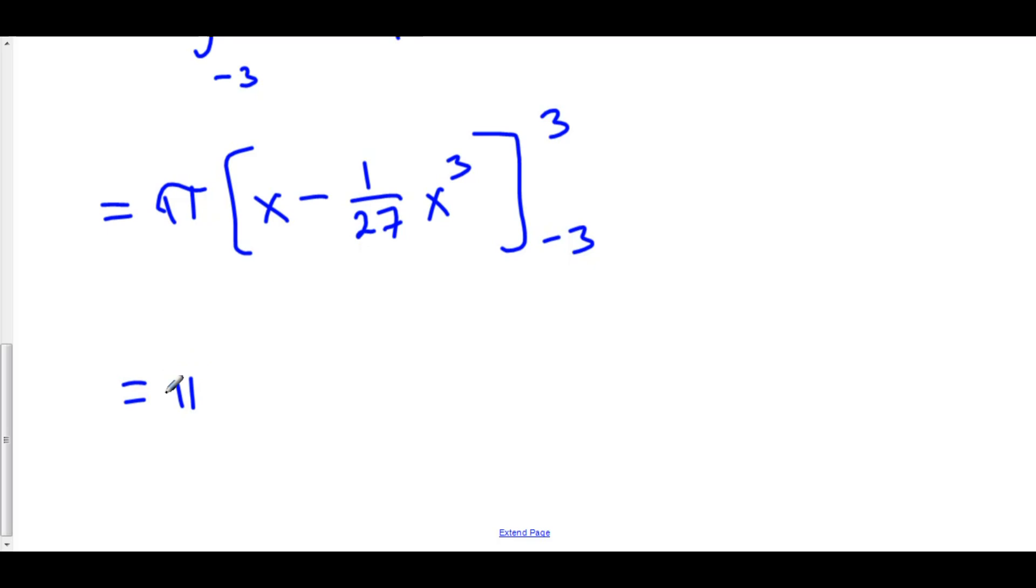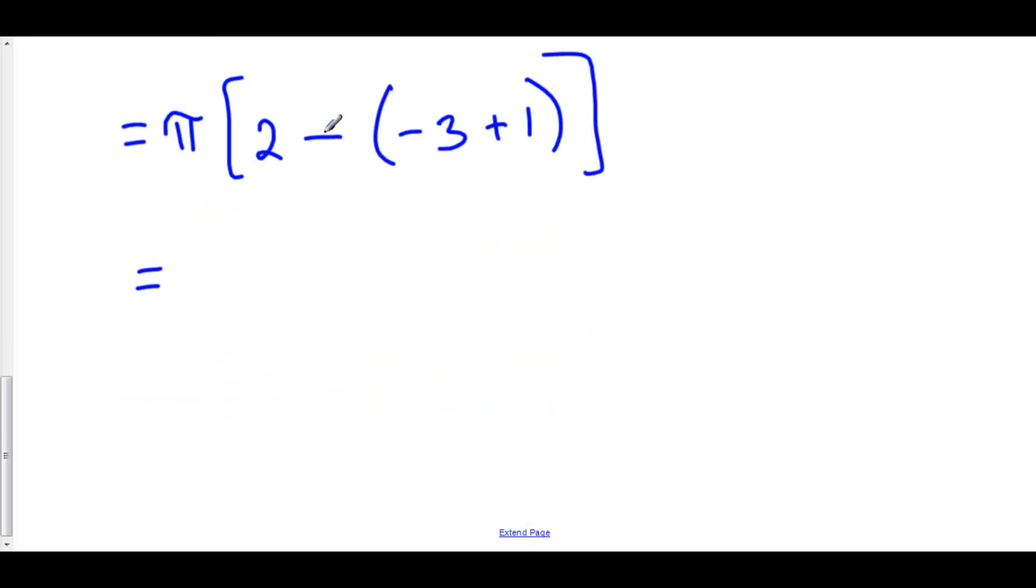This is pi times, let's plug positive 3 in. We have 3 minus, 3 cubed is 27, so 3 minus 1 is 2. Minus, let's plug in negative 3. We have negative 3 minus, negative 3 cubed is negative 27. Negative 27 over 27 is negative 1, so minus negative 1 is plus 1. 2 minus negative 2 is 2 plus 2. This is 4 pi, and that is the volume of this football.